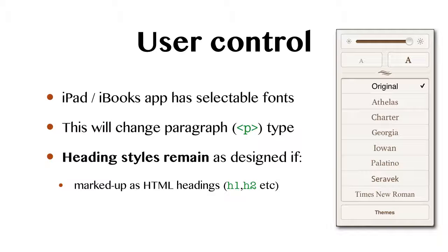The user can control how fonts are used in their reading experience. Here I've got an image of the font selector on the iPad with 'Original' ticked, meaning the font was embedded by the book creator, with other fonts available for the user to select. Selecting a font will change all paragraph text — anything marked up with the HTML paragraph element. However, heading styles will remain as designed, so iBooks respects the designer's choice of headings.